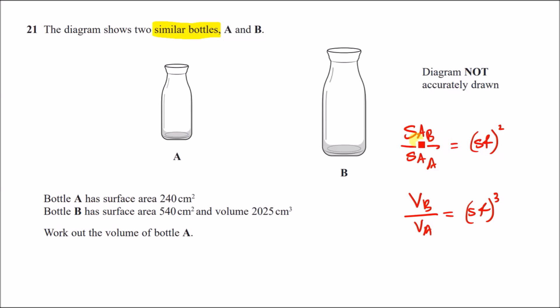Now, all they want us to do is basically plug in everything and see how to get a. So let's use the first equation here. We know the surface area b over a is 540 over 240, and it must equal a scale factor squared. So plug this into your calculator and then square root to get scale factor. You should get a scale factor of 3 over 2, or you can say 1.5 to be more exact.